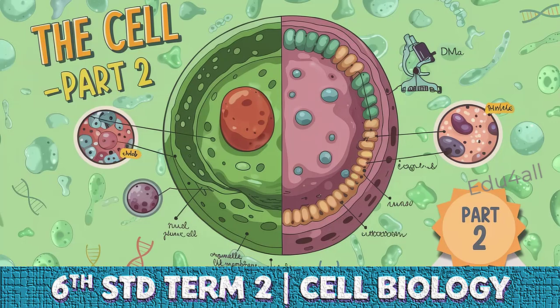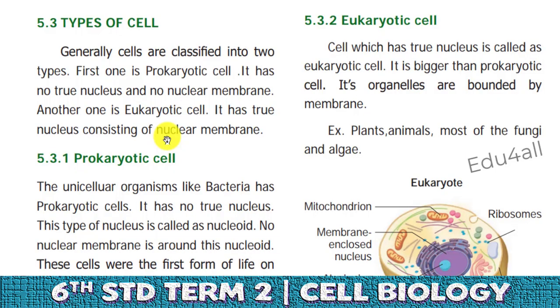Welcome friends and my dear students. Today we are going to see about 600 signs term 2, unit 5, part 2 video. In part 1 we saw about shapes of the cells, size of the cell, and discovery of the cell. In this video part 2 we are going to deal with types of the cell.